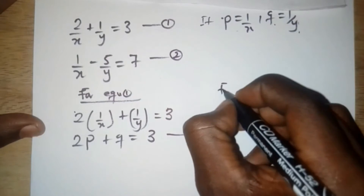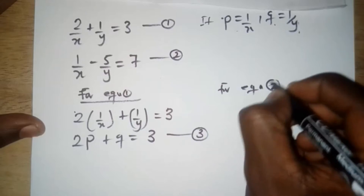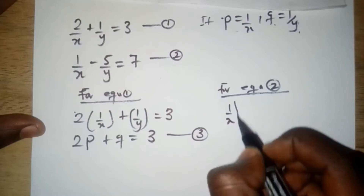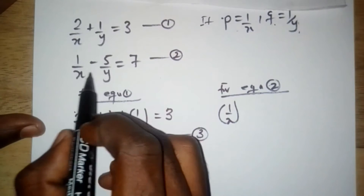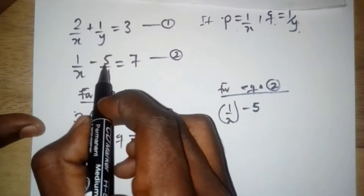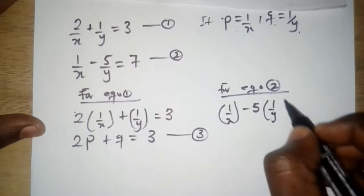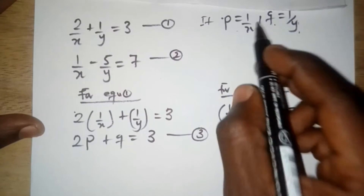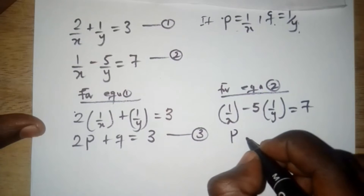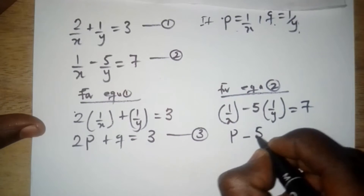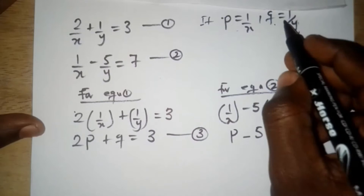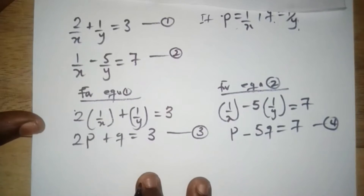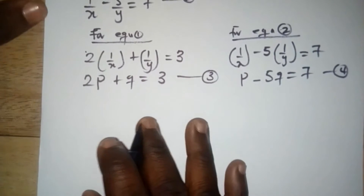Now for equation 2, we can also rewrite it. We bring the 5 out and we're left with 1 over y. So it is 1 over x, which is p, minus 5 times 1 over y, which is q, equal to 7. We can call this equation 4.